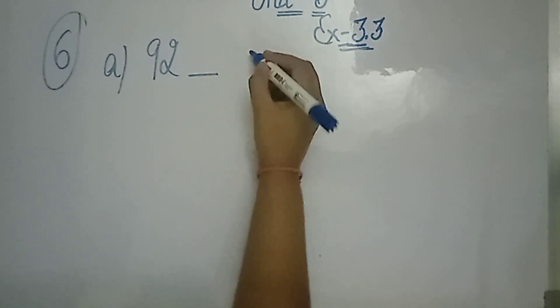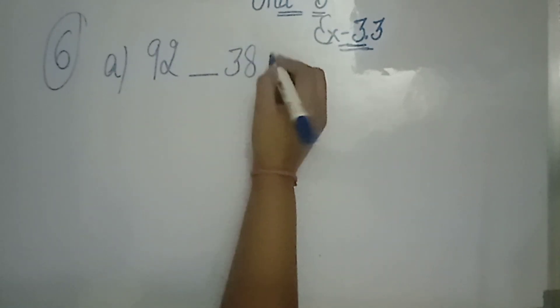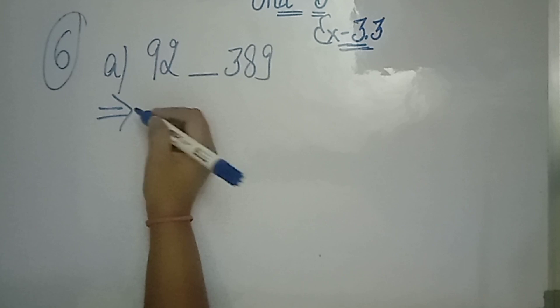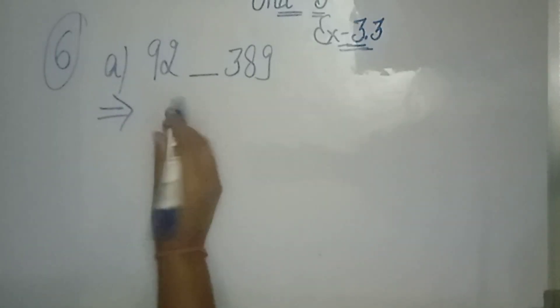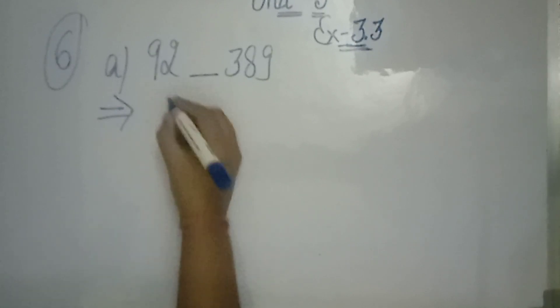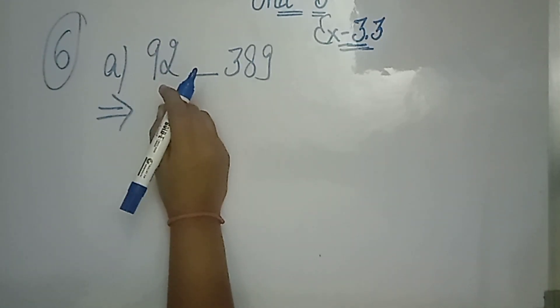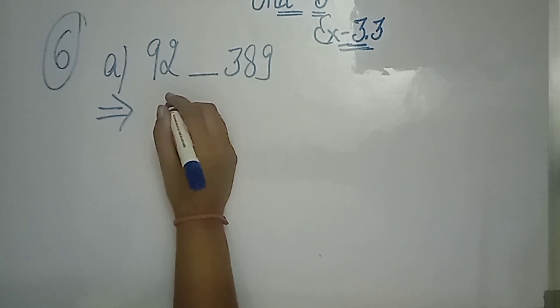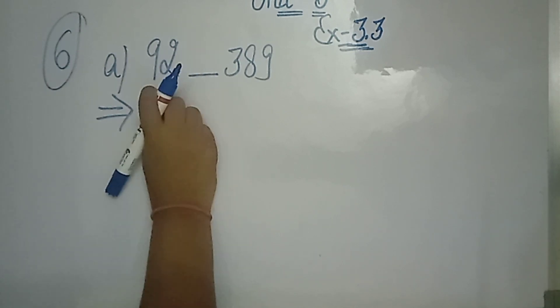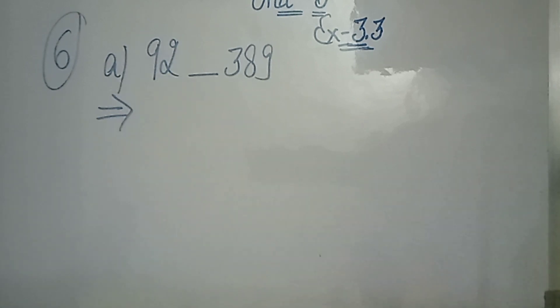So what will we do? We have 3, 8, 9. So we have to do 11, so we will do the largest and smallest. If we fill in the largest, 9, 8 and 8.